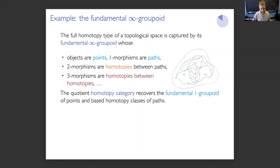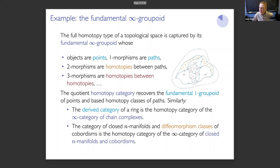There are other examples in other areas of mathematics. In algebraic geometry, there's something called the derived category of a ring. This is itself a homotopy category of an infinity category — the infinity category of chain complexes. Objects are chain complexes, then we have the ordinary morphisms, the chain morphisms, but also chain homotopies, and degree 2, degree 3, and all higher maps are naturally packaged into the structure of the infinity category of chain complexes. Some features familiar in the derived category, namely that it's triangulated, are more naturally expressed as properties of the infinity category.